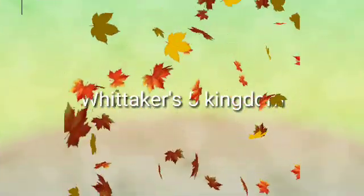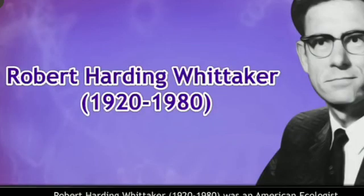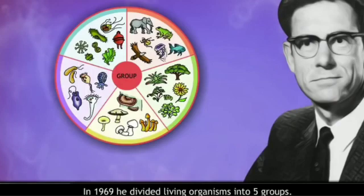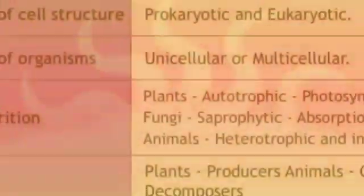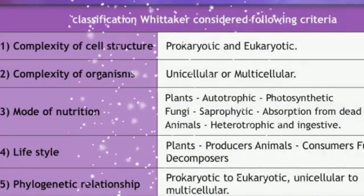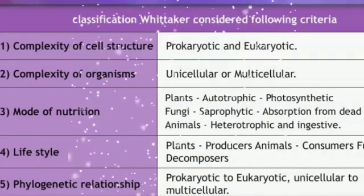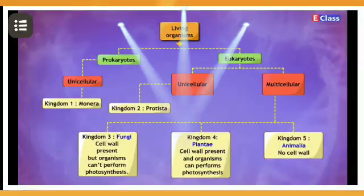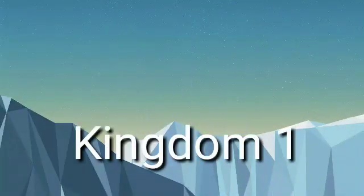Now let us see Whittaker's five kingdoms. Robert Harding Whittaker, from 1920 to 1980, was an American ecologist. In 1969, he divided living organisms into five groups. For this classification, he considered the following criteria: first, complexity of cell structure; second, complexity of organisms; third, mode of nutrition; fourth, lifestyle; and last, phylogenetic relationship. The five kingdoms are Monera, Protista, Fungi, Plantae, and Animalia.